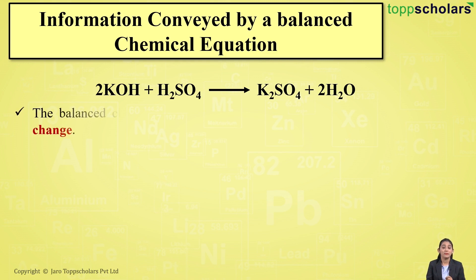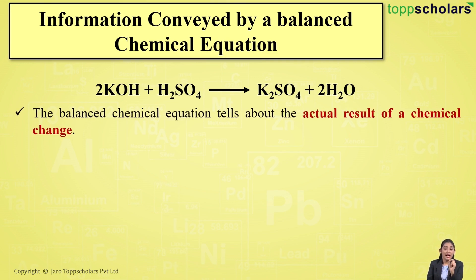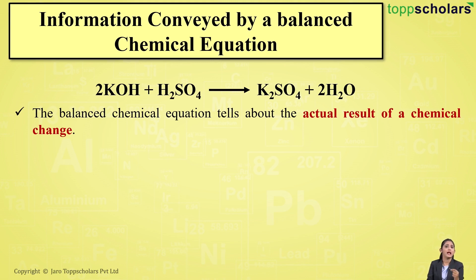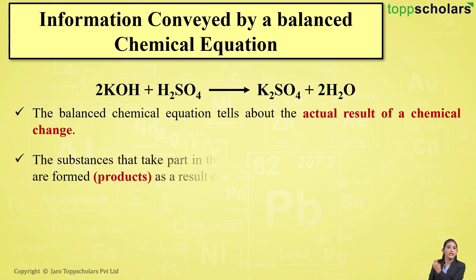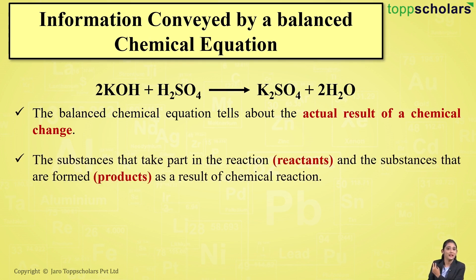The most important information provided by a balanced chemical equation is that it gives you the result of a chemical change — it tells you the reaction that is taking place. For example, in this reaction, you can see that potassium hydroxide reacts with sulfuric acid, resulting in the formation of potassium sulfate and water. From this, you can clearly see which are the reactants taking part and which are the products formed.